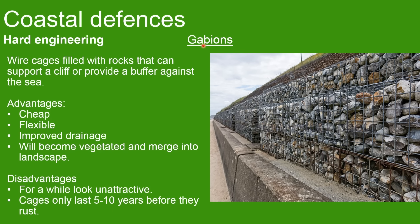The next hard engineering method is gabions — wire cages filled with rocks. On coasts these support a cliff and act as a buffer against the sea, helping to prevent sliding or falling. Advantages are that they're very cheap and flexible, can be moved or scaled up, and improve drainage so water doesn't penetrate the cliff and cause erosion. They can also become vegetated and blend into the landscape. Disadvantages are that they look unattractive and the wire cages rust after about five or ten years, making them unusable.